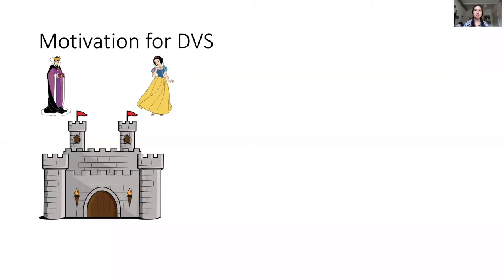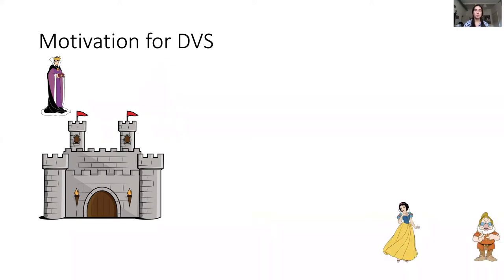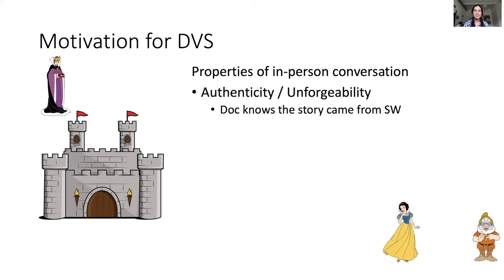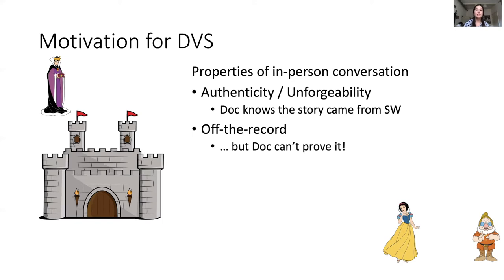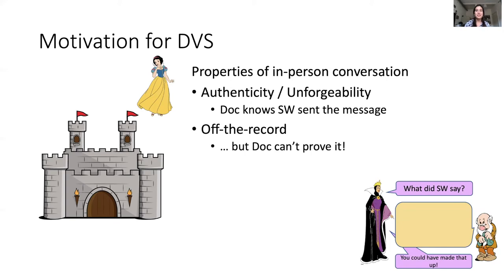I'd like to start with some motivation for multi-designated verifier signatures. Imagine we have Snow White, who works for a corrupt organization. She decides to blow the whistle on the corruption and tell Doc the Dwarf the whole story. There are several properties of their conversation important to Snow White. First, it's important to her that Doc knows she's really the one telling the story, so that he believes her. Second, it's important that Doc not be able to prove to anyone that the story really came from her, because if Doc could prove to the Evil Queen that Snow White tattled, she could get into a lot of trouble.